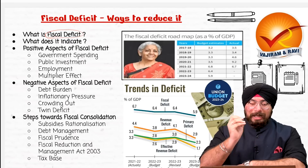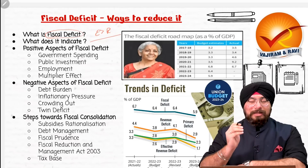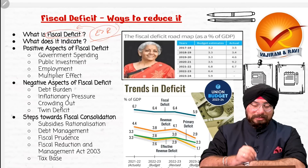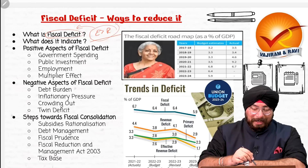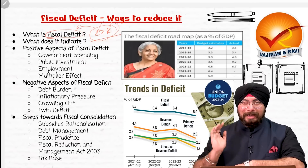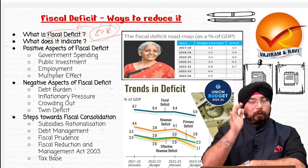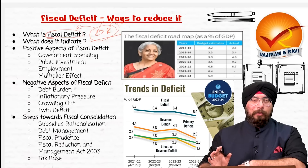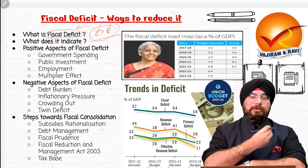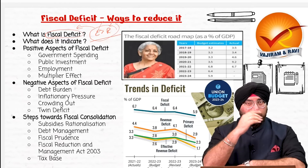When expenditure done by the government is more than the revenue which the government receives, that situation is called fiscal deficit. When expenditure is more and revenue is less, you are spending more than what you are getting, and in that condition fiscal deficit comes into place. Expenditure is more than revenue minus borrowings, which is why fiscal deficit also reflects the level of borrowing which the government needs to do.